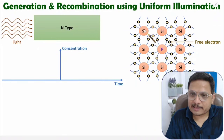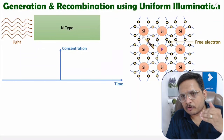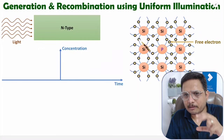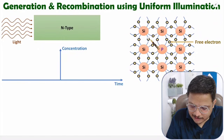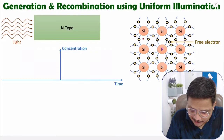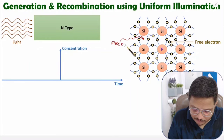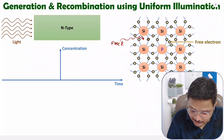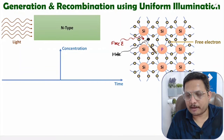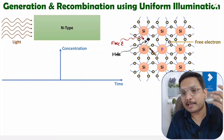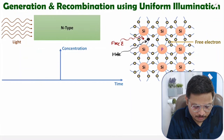As I have told you, there will be generation of electron-hole pairs. For example, by falling light on n-type material, an electron becomes free — that is a free electron now. At the vacated space there will be a vacant site referred to as a hole. So this is one electron-hole pair. Likewise, many electron-hole pairs can be generated because of this light.